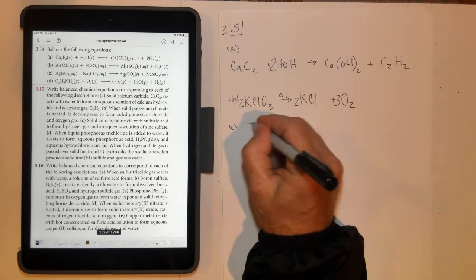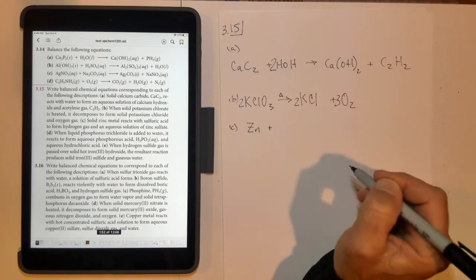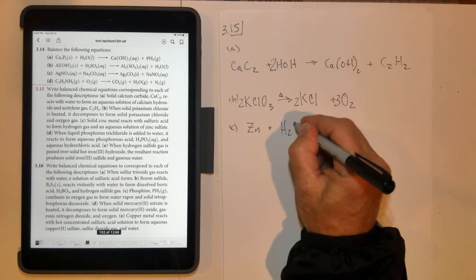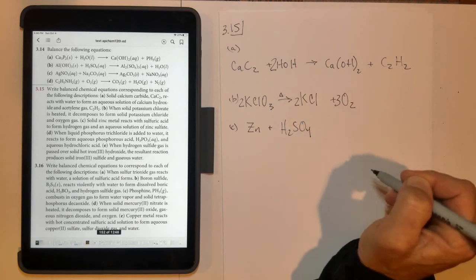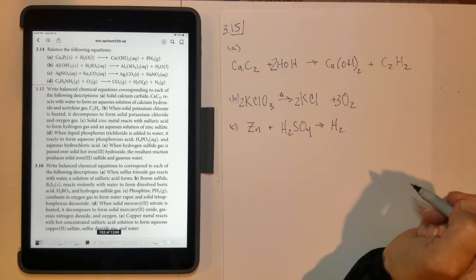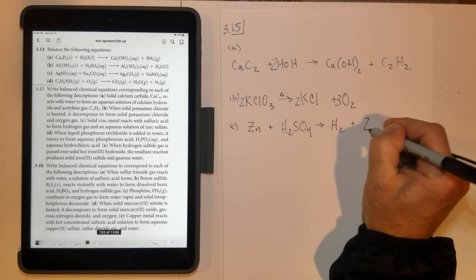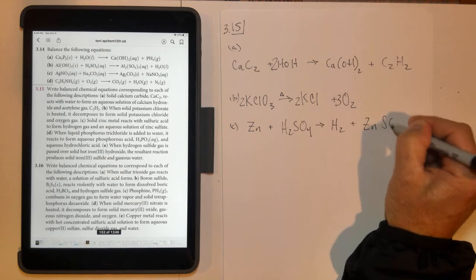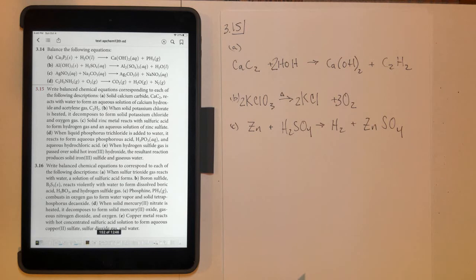Letter C, solid zinc metal, Zn, reacts with sulfuric acid, H2SO4, to form hydrogen gas, H2. Remember it's diatomic, and an aqueous solution of zinc sulfate. Zinc's always plus 2, sulfate is minus 2. That one's already balanced.